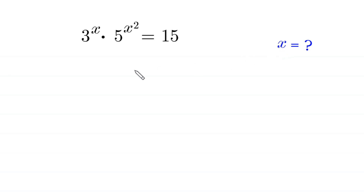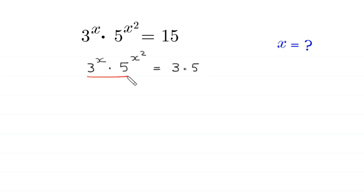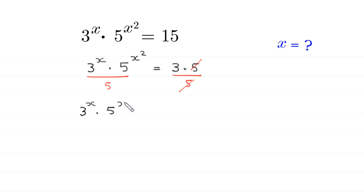Let's start. 3 to the power x times 5 to the power x squared equals 15. This 15 can be written as 3 times 5. From here, we divide both sides by 5, so this 5 gets cancelled with this 5, and this equation will become 3 to the power x times 5 to the power x squared divided by 5 is equal to 3.